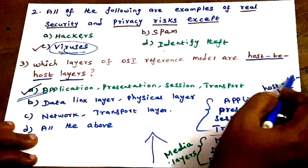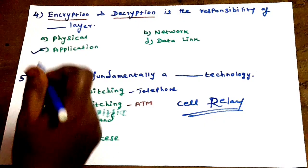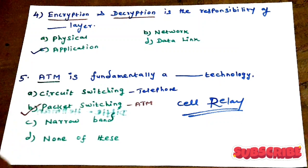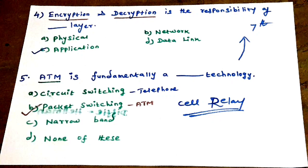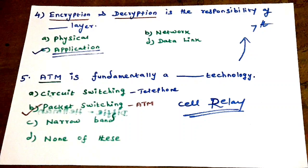Question 4: Encryption and decryption is the responsibility of which layer? From bottom to top, the seventh layer is responsible. The Application layer is also closer to the user.